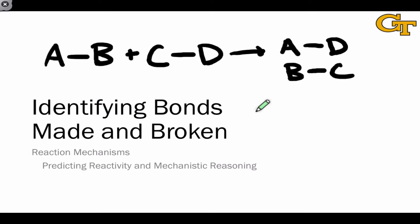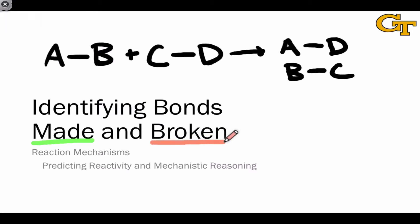One tool that's extremely helpful to take stock of what's going on in terms of electronic movements within a reaction is this idea of identifying bonds made in a reaction — that is, bonds created in the products — and bonds broken in a reaction, that is, bonds destroyed in the reactants.